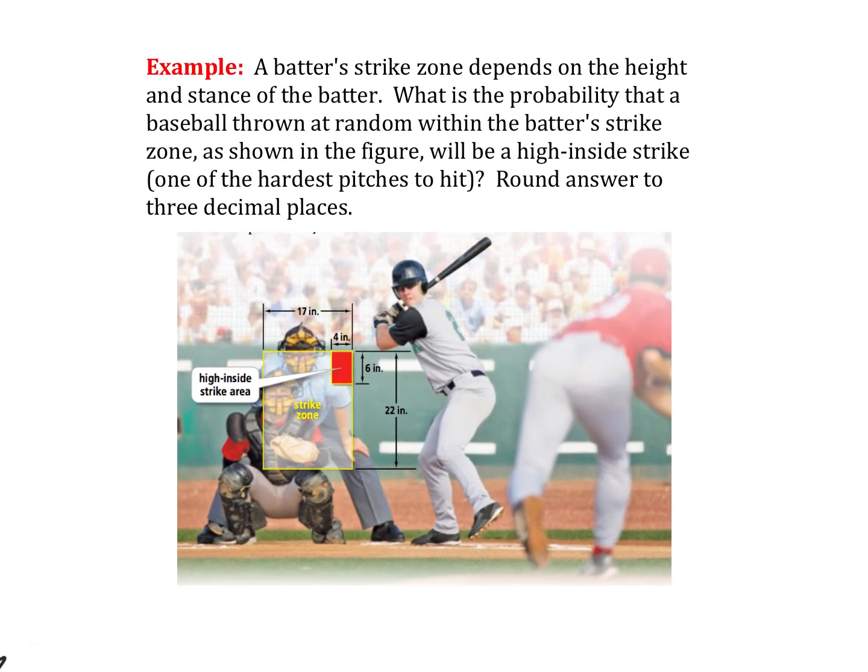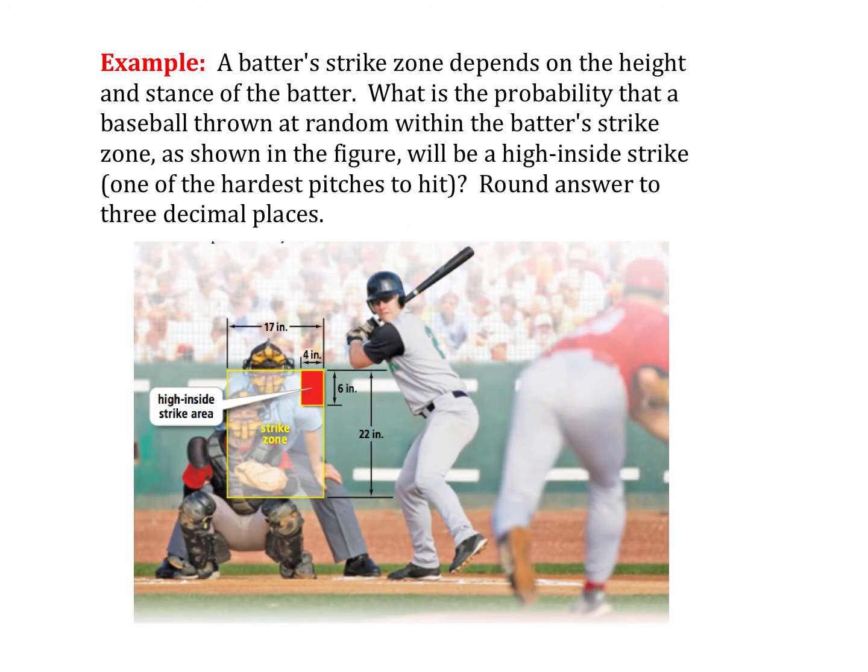Last example here. Got a batter strike zone. Depends on the height and stance of the batter. What is the probability that a baseball thrown at random within the batter strike zone, as shown in the figure, will be a high inside strike? So we want to know, assuming that a ball gets thrown into here, what is the probability that we can get it into that little section? So I need the area of this little rectangle divided by the area of the entire rectangle.